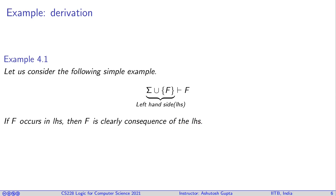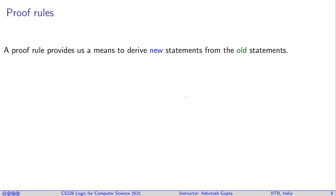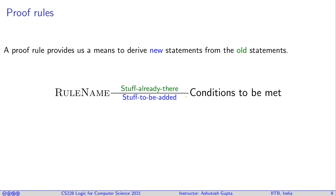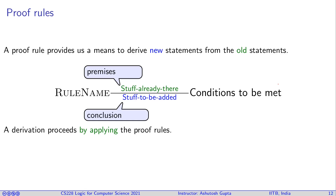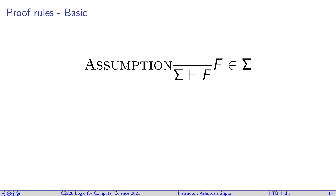When can we say σ proves F? A simple example: if F already appears on the left-hand side, we can say F can be derived. A proof rule provides a means to derive new statements from old ones. Proof rules have a top part stating what can already be derived, and from those premises we derive a conclusion. Each rule has a name, premises, a conclusion, and possibly a side condition. Applying sequences of these rules constitutes derivations.